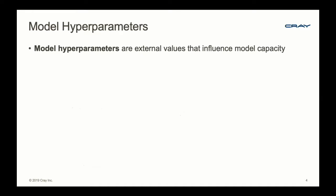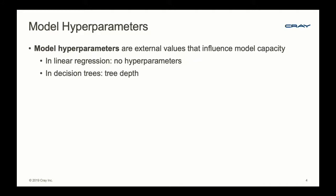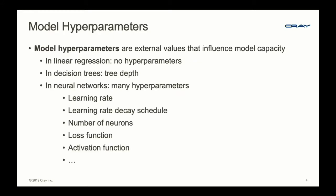That transitions us to model hyperparameters. Model hyperparameters are values that are external to the model but influence the model capacity. In linear regression, we don't really have any hyperparameters—there are no knobs to turn. In decision trees, we can think about modifying tree depth as a hyperparameter. In neural networks, we have many hyperparameters: learning rate, learning rate decay schedule, number of neurons, loss function, activation function, and so on.